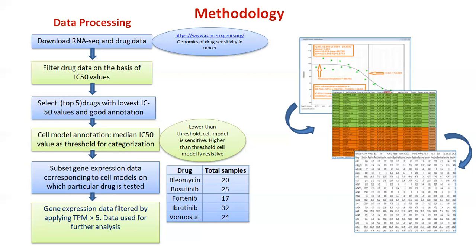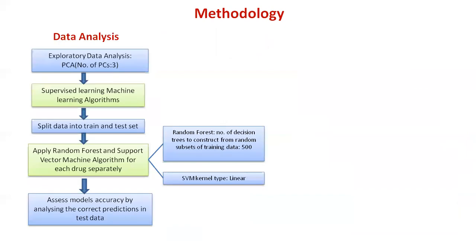In total, for the five drugs — bleomycin, positinib, fortinib, ibrutinib, and vorinostat — we had around 20, 25, 17, 32, and 24 samples respectively. The methodology of data analysis is further explained in the flowchart, and all data analysis work was performed on the Topper Bioinformatics server.